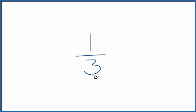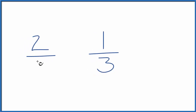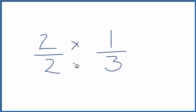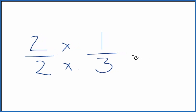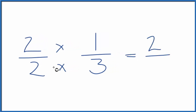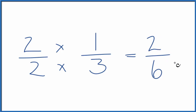So we could multiply one-third by one. But instead of one, let's use two over two. Two divided by two, that's one. So two times one equals two, and two times three equals six. So two-sixths is an equivalent fraction to one-third. They have the same value — divide one by three, two by six, you'll get the same decimal.